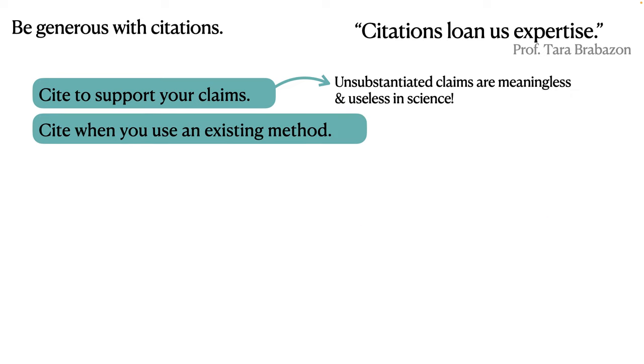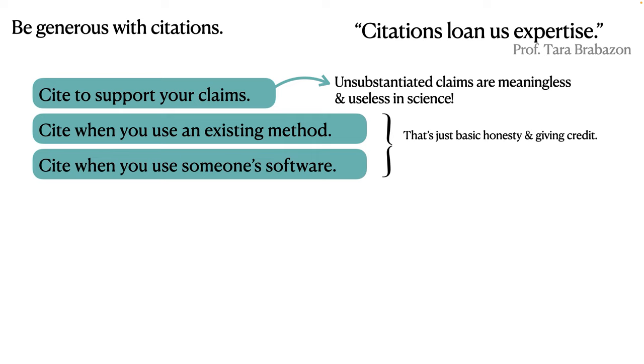So of course, you should also cite when you use an existing method or when you use someone else's software. Now, that's just basic honesty and giving credits. But it also prevents you from plagiarism. So if you don't cite the relevant source and give an impression that you yourself have come up with a method or have developed a software, then that's plagiarism.